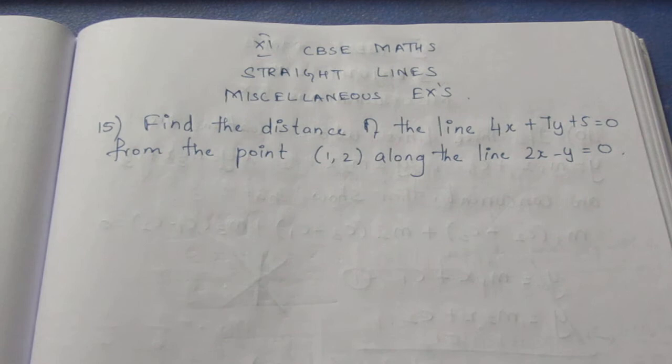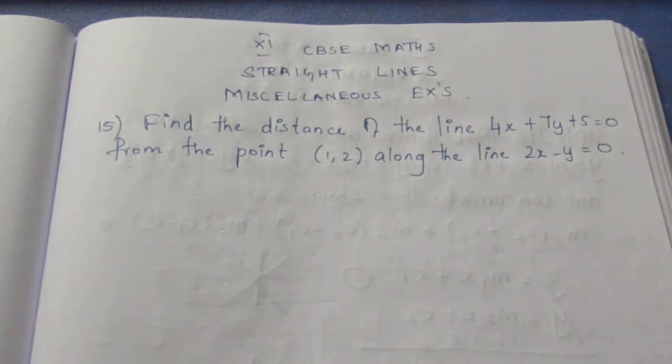Find the distance of the line 4x plus 7y plus 5 equals 0 from the point (1,2) along the line 2x minus y equals 0.